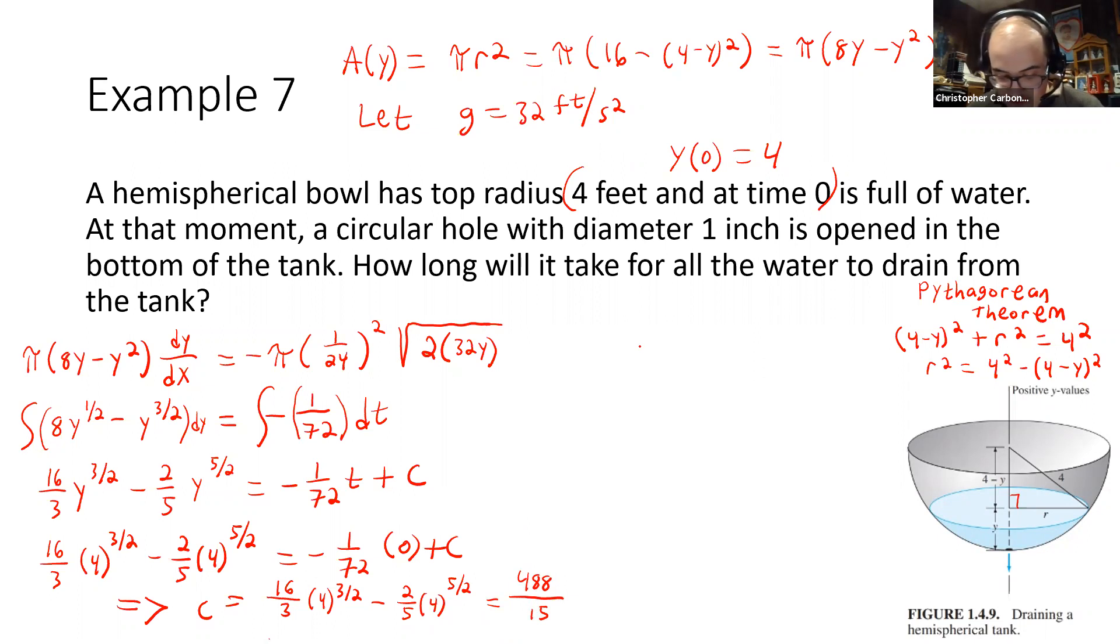And then, based upon this, since we want to know how long would it take for the water to drain from the tank, we would have, in order for this to be empty, let me just space this out here a bit. For this to be empty, we want y to be equal to zero. So that would be when we have t is equal to, this will be 72 times our fraction of 488 divided by 15.